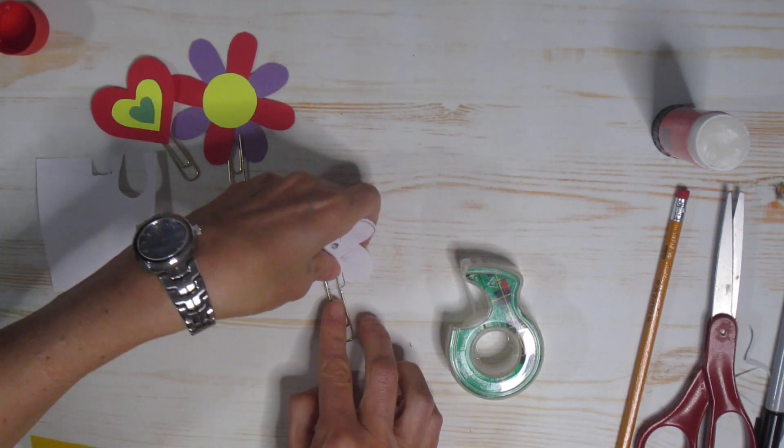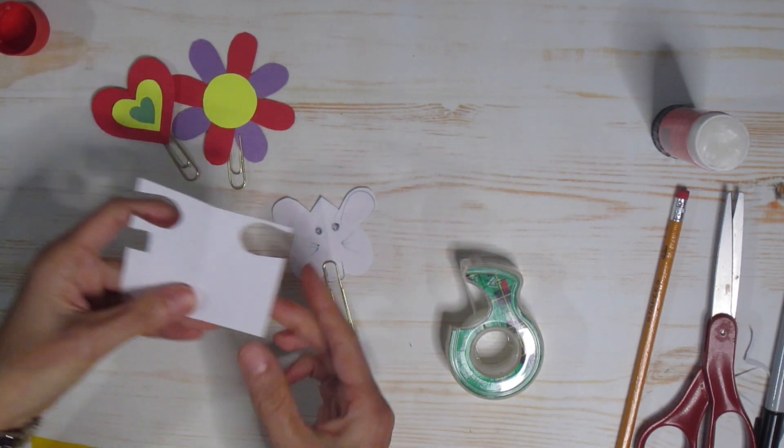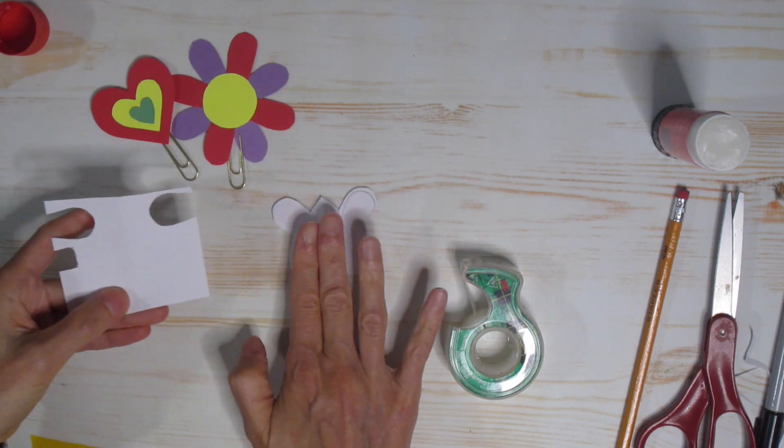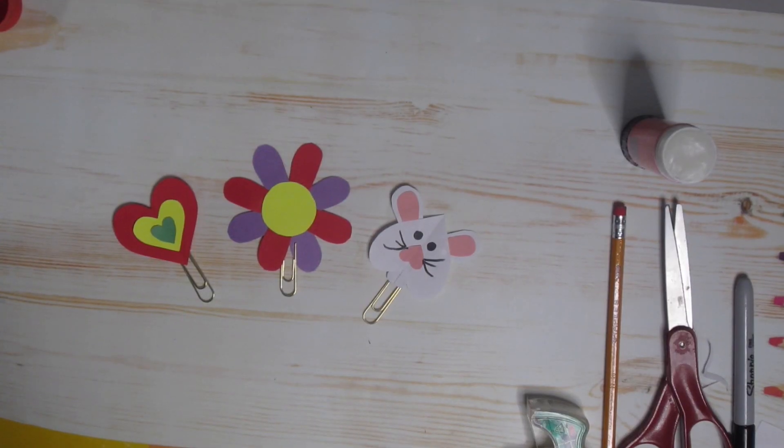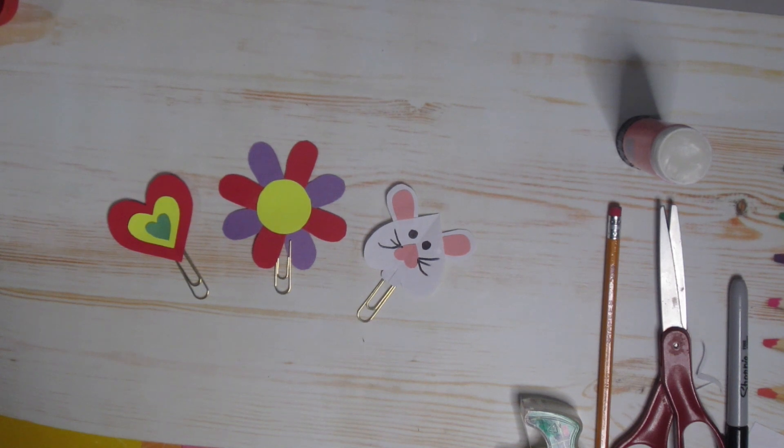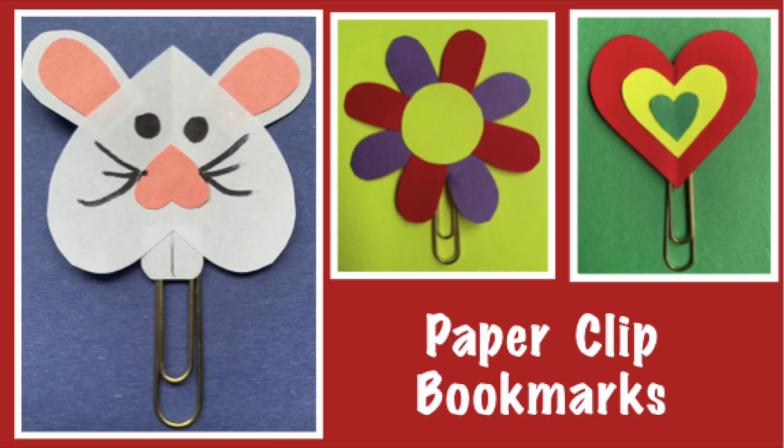Or if you don't have that, you can use glue, make another heart the same size as your heart, put a bunch of glue on that, and that should stick it together. And there you go. Now you can be creative and make different bookmarks in whatever shapes and sizes you would like. Thanks for joining me on Craft Club for Kids. Remember, be creative and have fun.